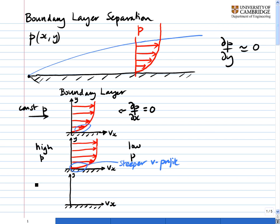Now if we consider the opposite case — low pressure upstream going to high pressure downstream — we'll find the free stream has been slowed down. Everything in the boundary layer is slowed down by the same pressure gradient. The boundary layer wants to develop negative velocities, but at the bottom the no-slip condition requires zero velocity. So the velocity bends around and what we find is normal flow at the top and a little bit of reverse flow at the bottom of the boundary layer.